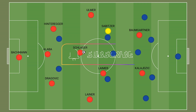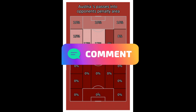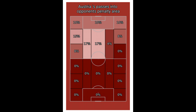Sabitzer didn't just play a key role in ball progression — he also played a key role in chance creation. This image shows the zones where Austria's passes into the penalty area were played. The central zone between the edge of the box and the halfway line accounted for 17% of passes into the penalty area, matched by 17% from the narrow left half space, compared to just 4% from the right half space. Meanwhile, 33% of Austria's passes into the penalty area came from the left wing, while just 18% came from the right wing. Again, this isn't a coincidence — Sabitzer played a big part in how heavily the left side was involved in chance creation.